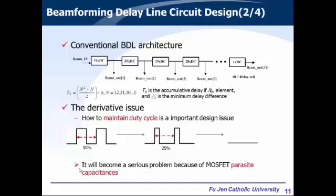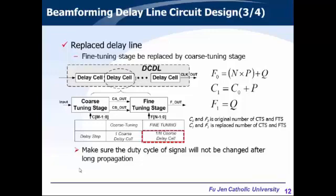The number of delay cells for each channel forms an arithmetic sequence. However, this beamforming uses too many delay cells, which brings derivative problems. The duty cycle cannot be maintained after long propagation and will degrade, and this problem becomes more serious when considering parasitic capacitances. To address this, we replace the fine-tune stage with the coarse-tune stage, because the coarse-tune stage is more stable. According to the delay table, the delay of the fine-tune stage is one order of the coarse-tune stage, so we can replace fine-tune stages with coarse-tune stages.